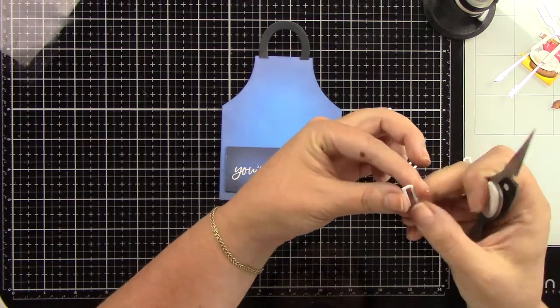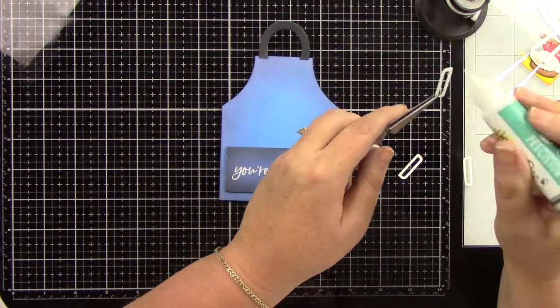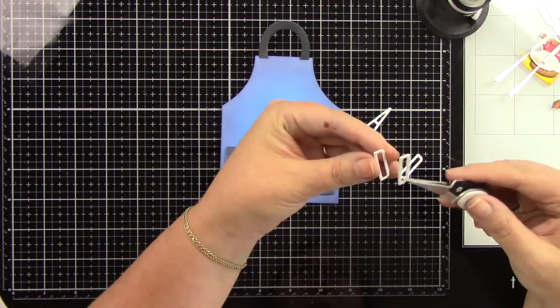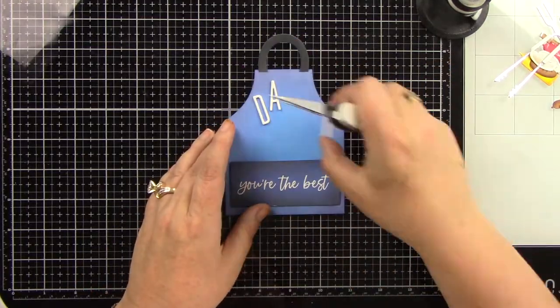You also could use fun foam and stick it to die cut out these words to give dimension, but this is just really fast. I actually like doing it. There's something kind of therapeutic about gluing all of the letters together. So I'm going to glue those together and we're going to add that to the top part of our apron.